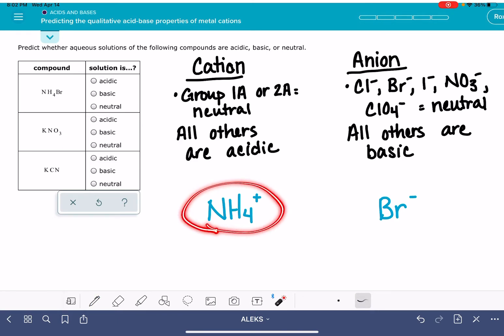When we look at our cation, our cation is not coming out of group 1A or 2A on the periodic table. That would be something like the sodium ion, the potassium ion, etc. So that means because this is not a group 1A or 2A, this is an acidic cation. What about our anion? Our anion is bromide. It's one of our neutral anions. So this guy is neutral.